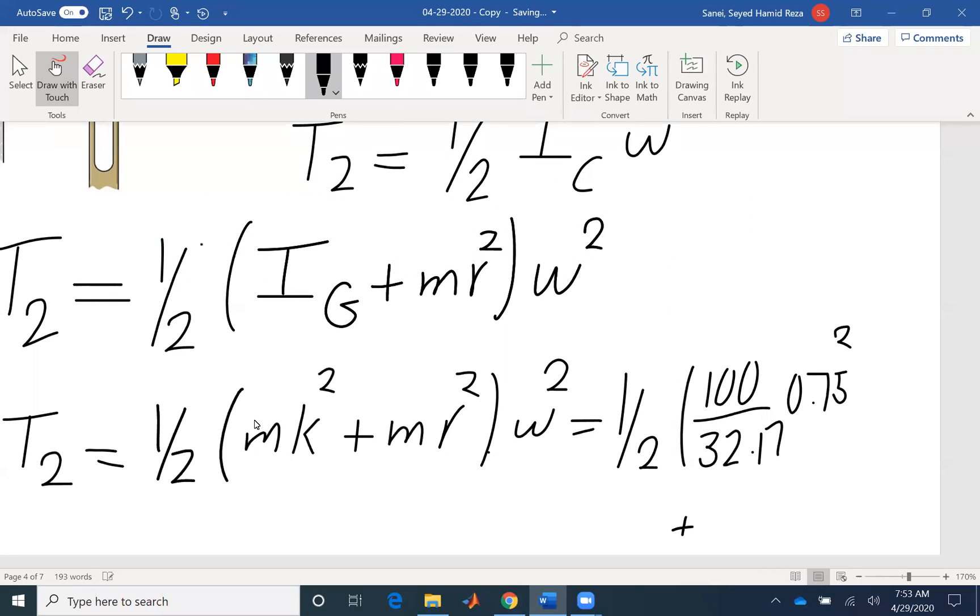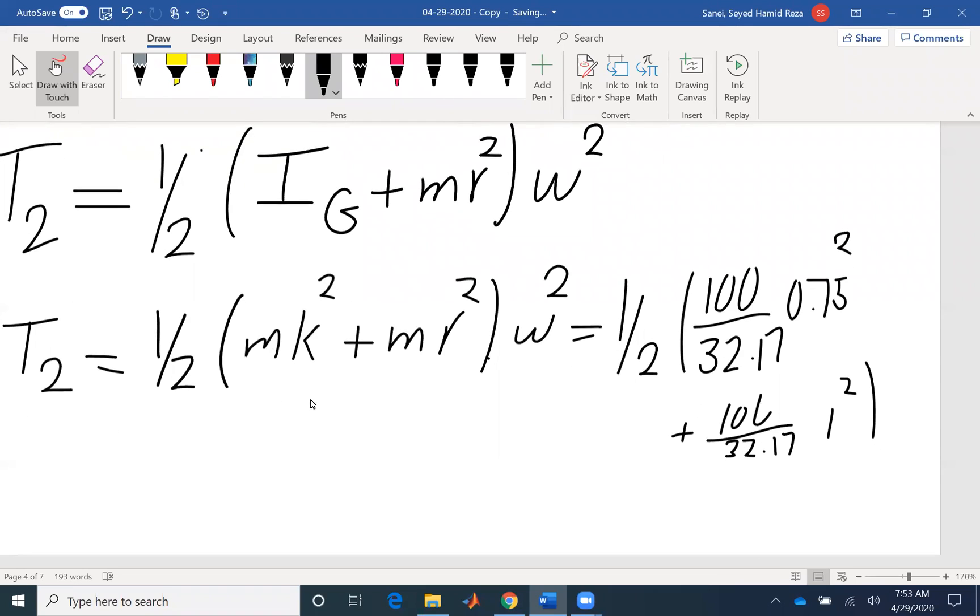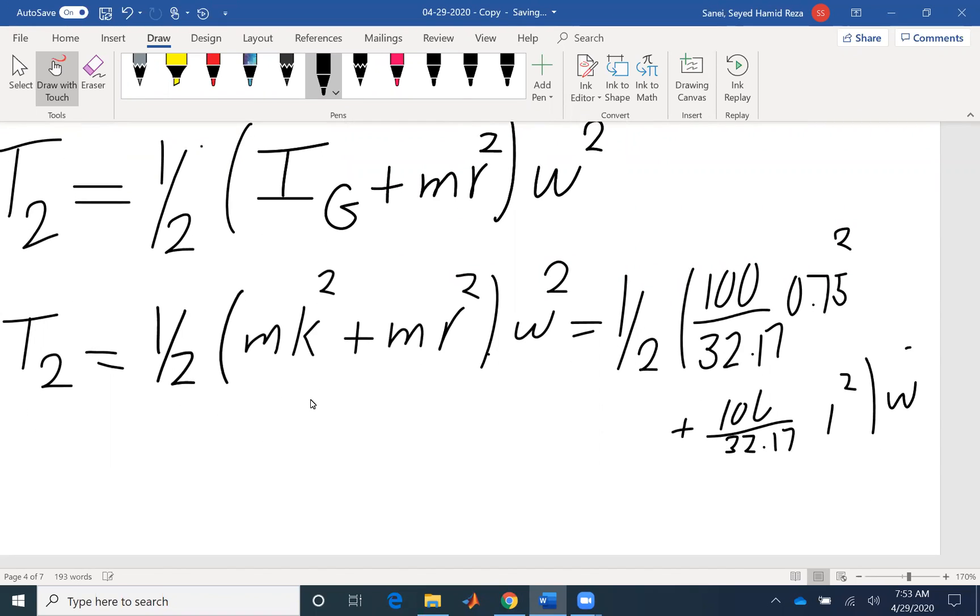I'm gonna write it here. M again. I could factor M as well. That would have made it simpler. And R squared, which is here is 1. And the whole thing multiplied by omega squared.